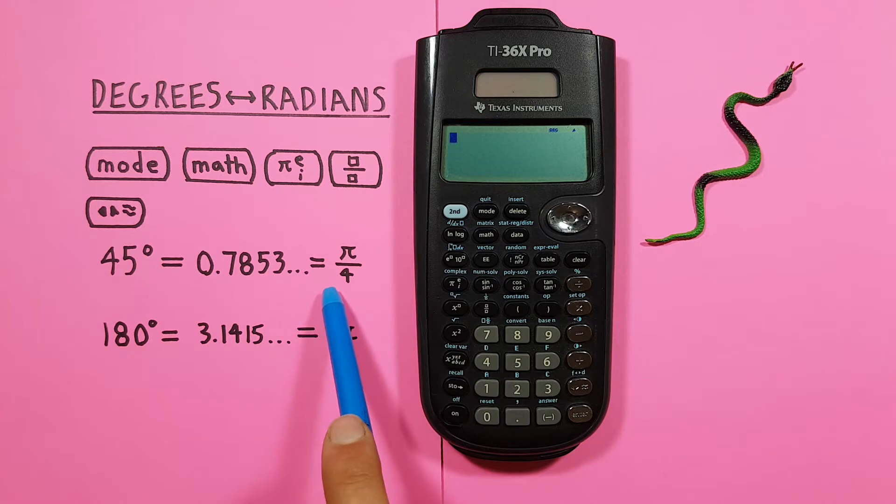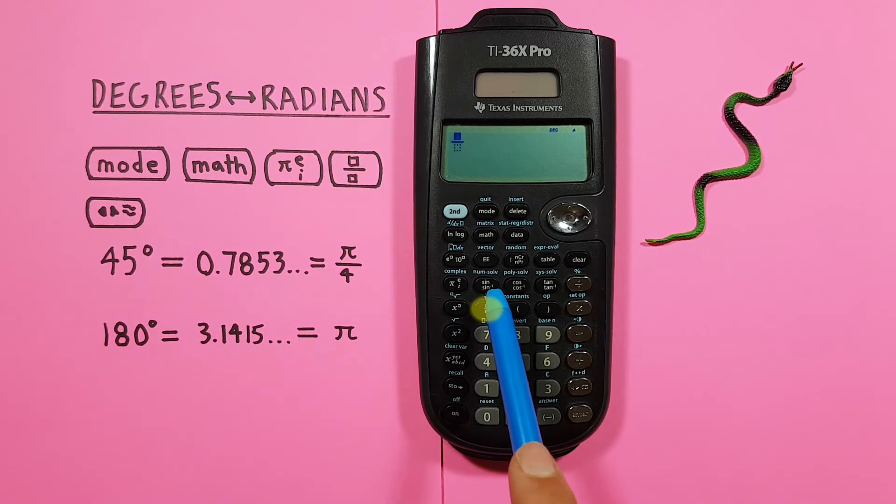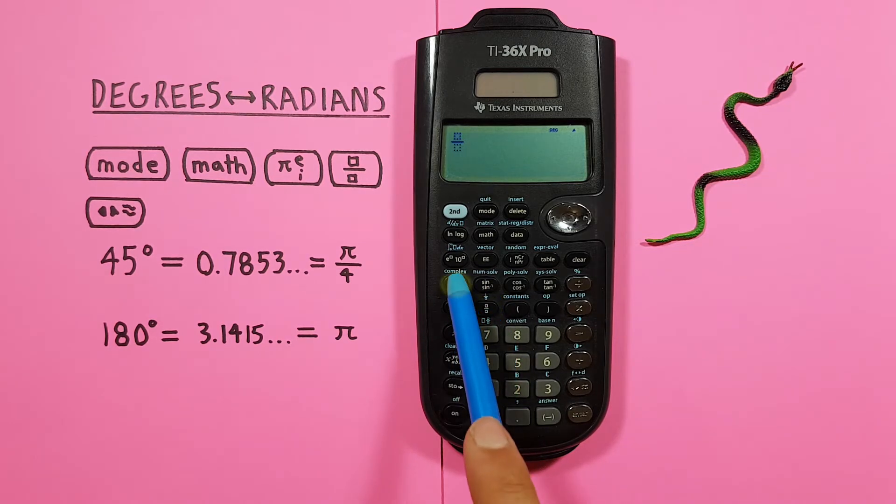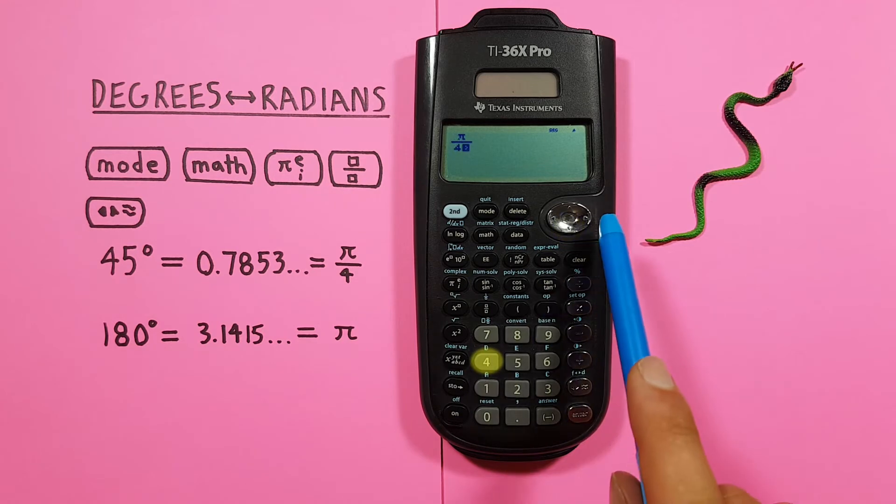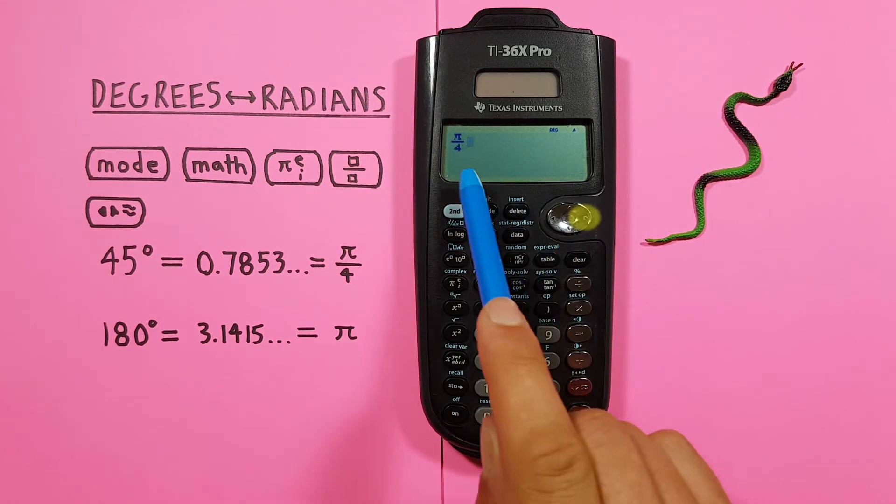Next we enter our radians, which was PI over 4. So we can use the fraction key. And then PI. Scroll down. 4. And then scroll to the right to get out of that fraction.